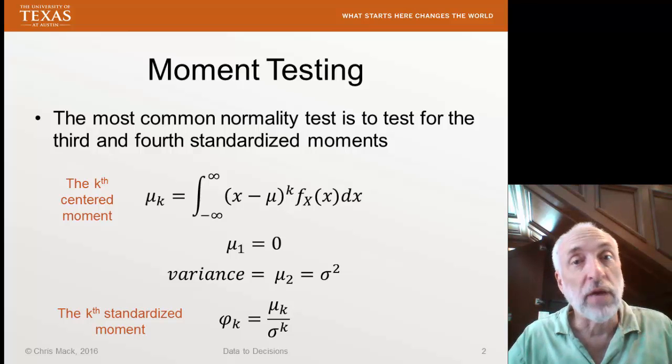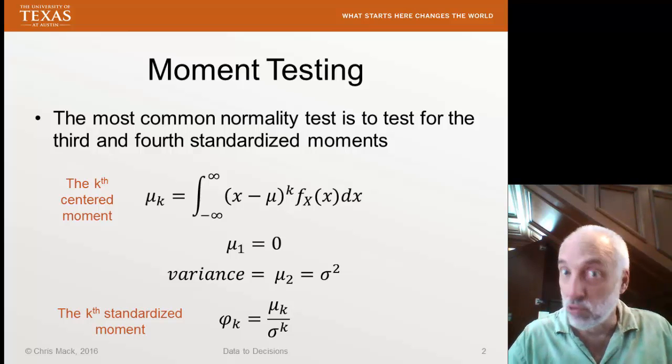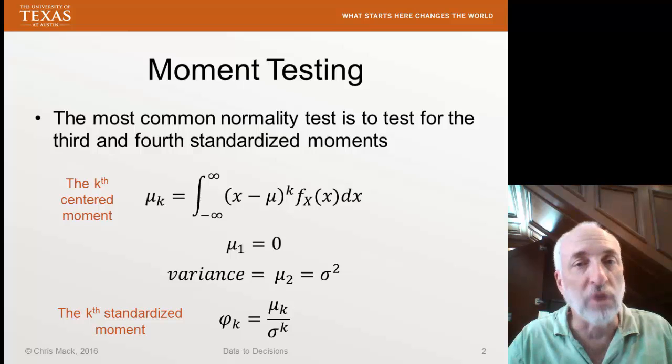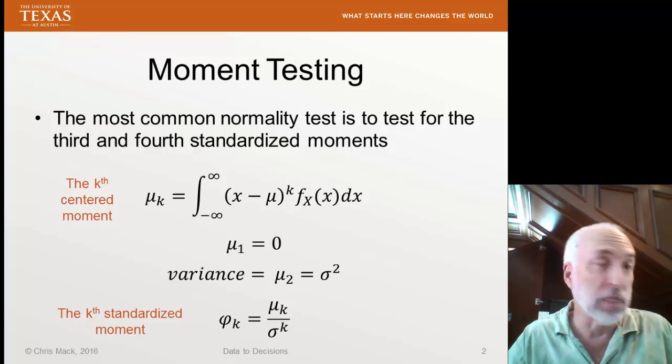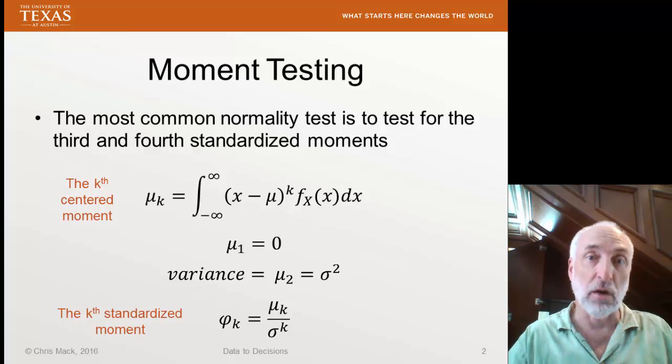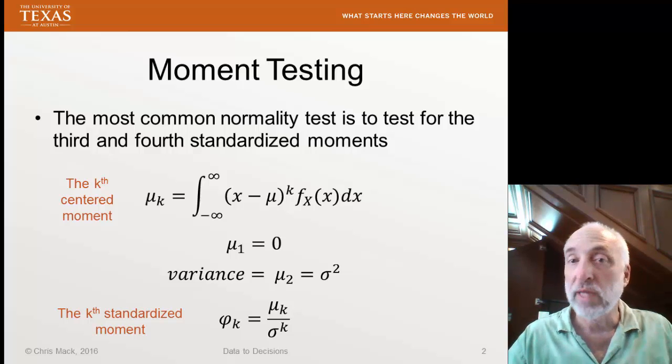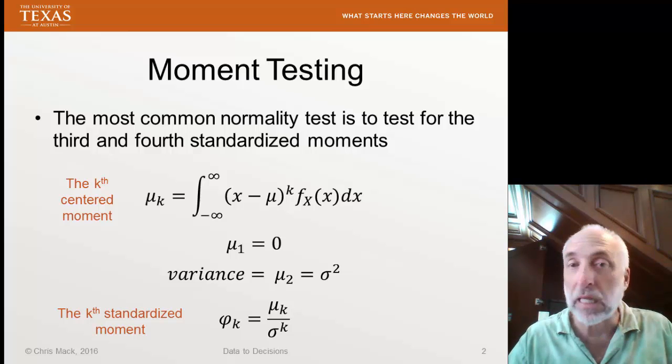Last time we mentioned that moment testing was the most common way in which we can test whether a distribution is normal or not. We'll often want to test residuals, for example, from a regression fit to find out if they're normal, because for ordinary least squares regression, we make the assumption that they are. We can test for normality in a number of ways, but for right now we're going to concentrate on moment testing.